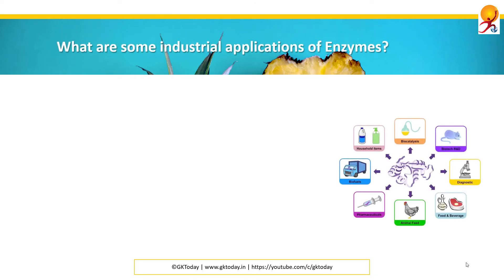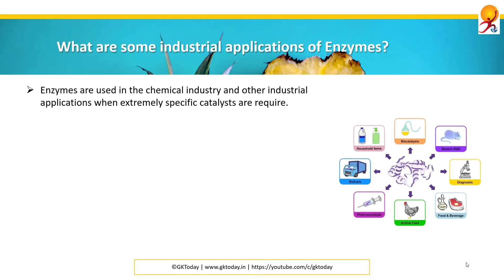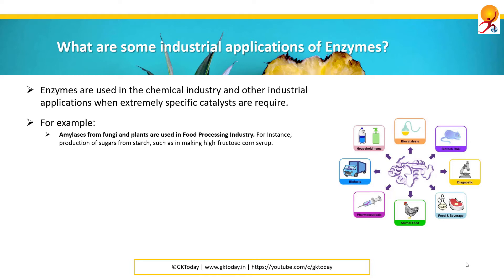What are some industrial applications of enzymes? Enzymes are used in the chemical industry and other industrial applications when extremely specific catalysts are required. For example, amylases from fungi and plants are used in the food processing industry, such as in the production of sugar from starch, as in making high fructose corn syrup.